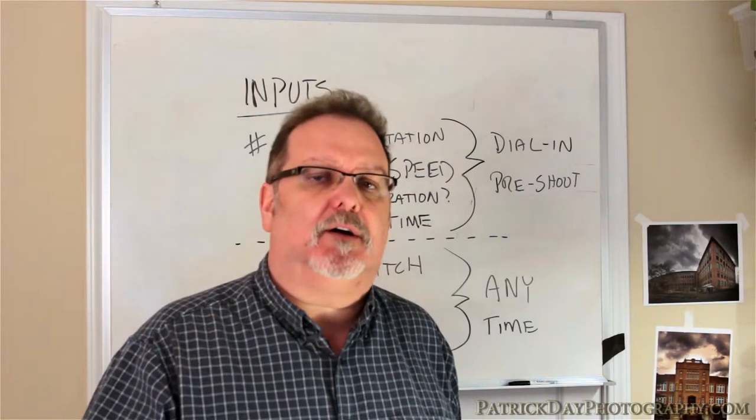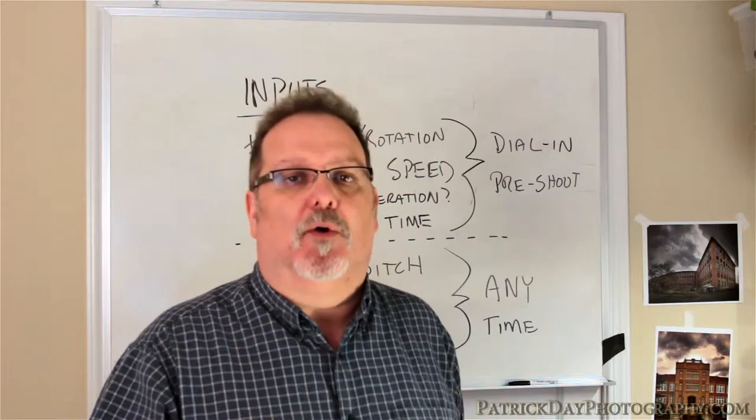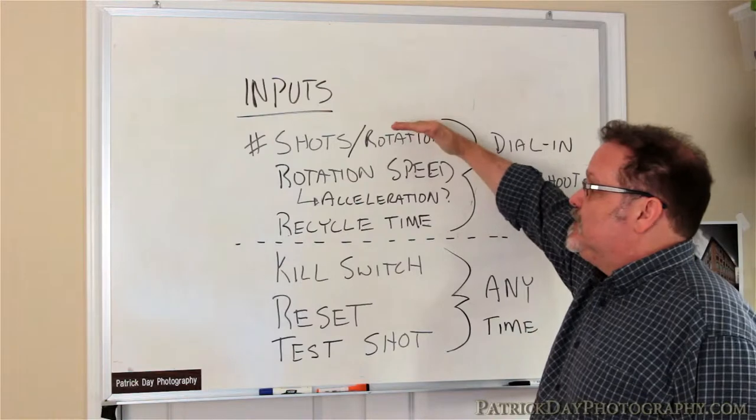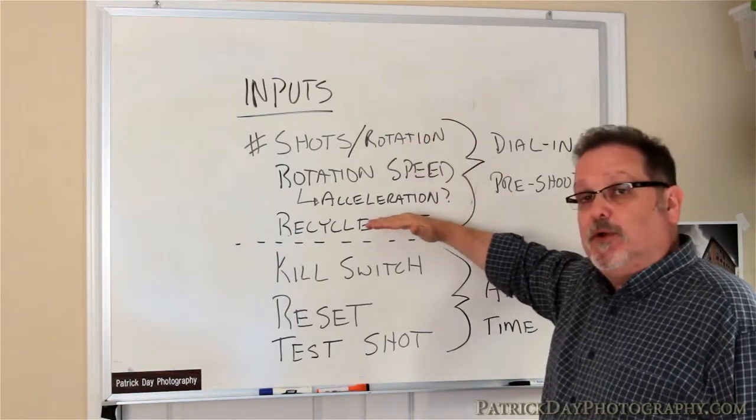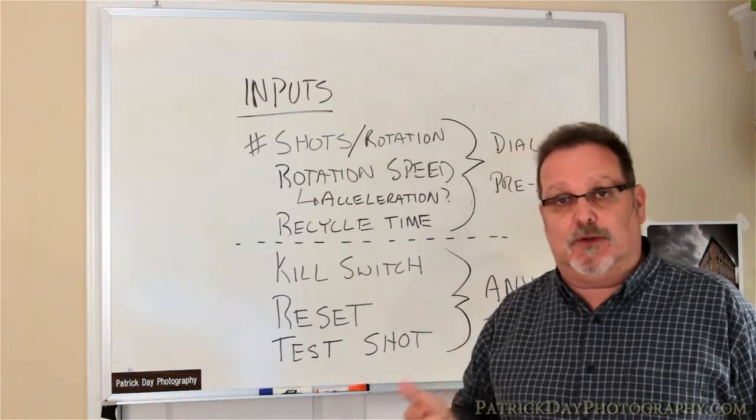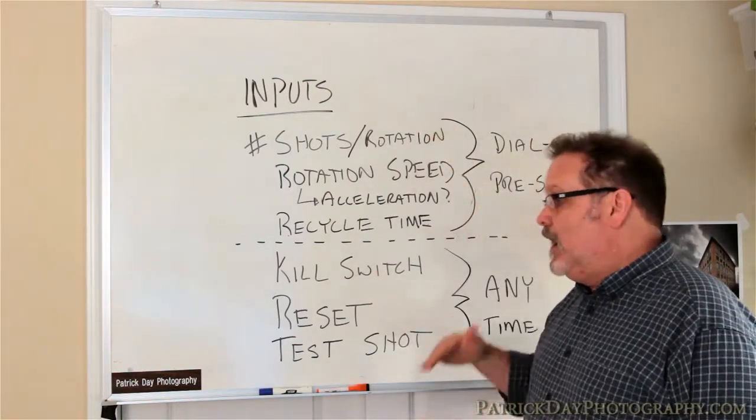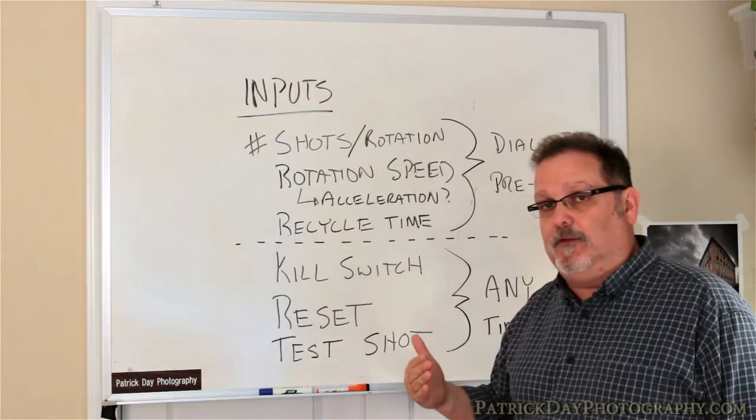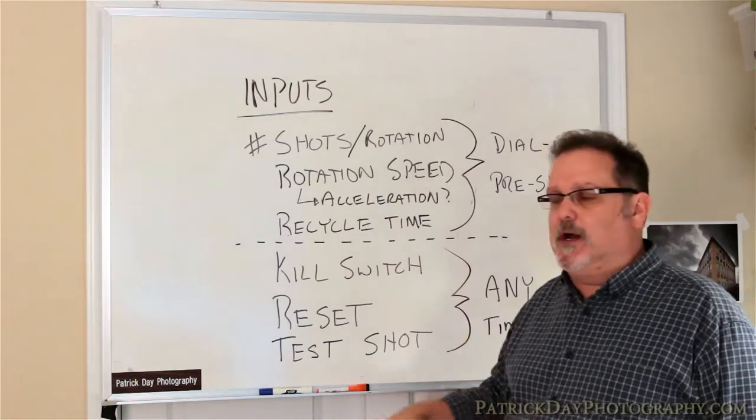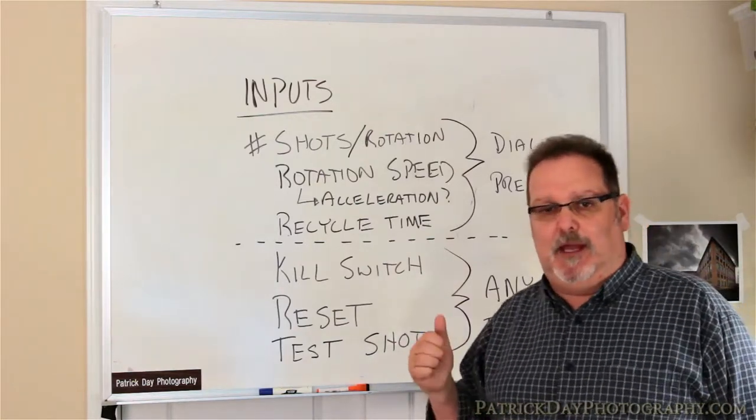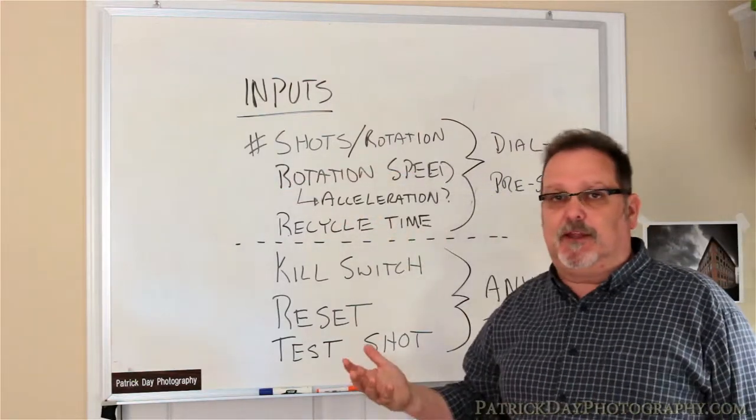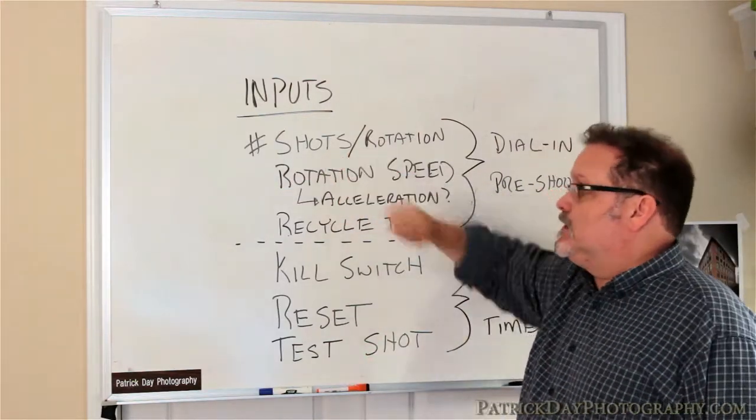Alright, so now let's talk about the inputs for the device. What we're going to have is a set of inputs that we're going to dial into the machine before it begins and then it's going to start. And these are going to be what operate it during the course of the photo shoot. Of course, the first thing that comes to mind is the number of shots per rotation.